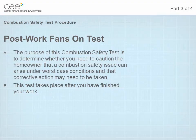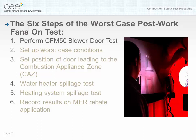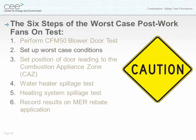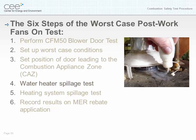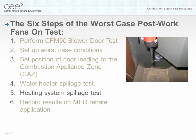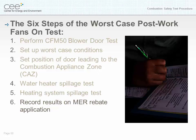Post-work fans on test. The purpose of this combustion safety test is to determine whether you need to caution the homeowner that a combustion safety issue can arise under worst case conditions and that corrective action may need to be taken. This test takes place after you have finished your work. The six steps of the worst case post-work fans on test: number one, perform the CFM 50 blower door test; number two, set up worst case conditions; number three, set position of door leading to the combustion appliance zone; number four, the water heater spillage test; number five, the heating system spillage test; number six, record the results on the MER rebate application.